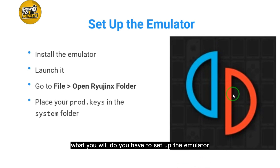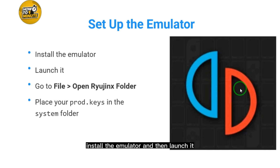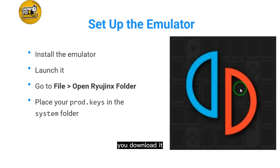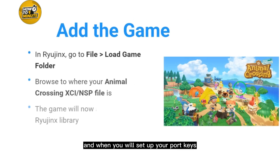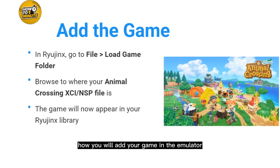After that, set up the emulator — install it and then launch it. Go to File on the emulator, place your prod keys in the system folder. Once your prod keys are set up, you're ready to add the game.